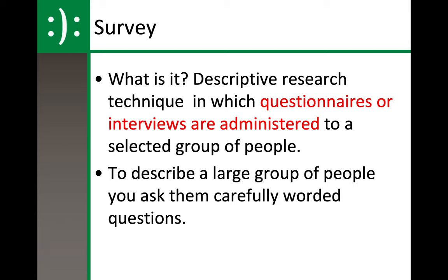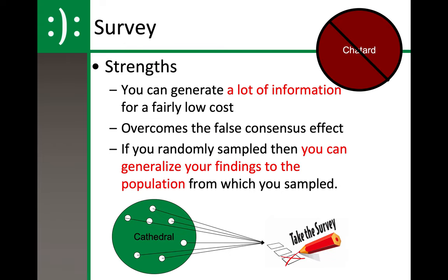What about a survey? You've taken surveys all the time — Twitter polls, Google Forms for school. One of the great things about surveys, or what we call questionnaires, is they give you a lot of information in a quick amount of time. The strength is that you can get a lot of information at a fairly low cost. You will conduct a survey experiment twice in this class — once during this unit and once in another unit in the second semester. If you randomly sample people, which is tough to do in a school environment, you can generalize your findings to the population.